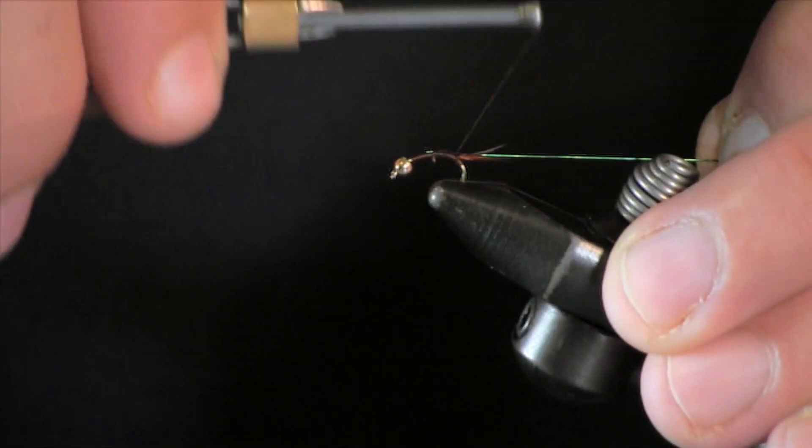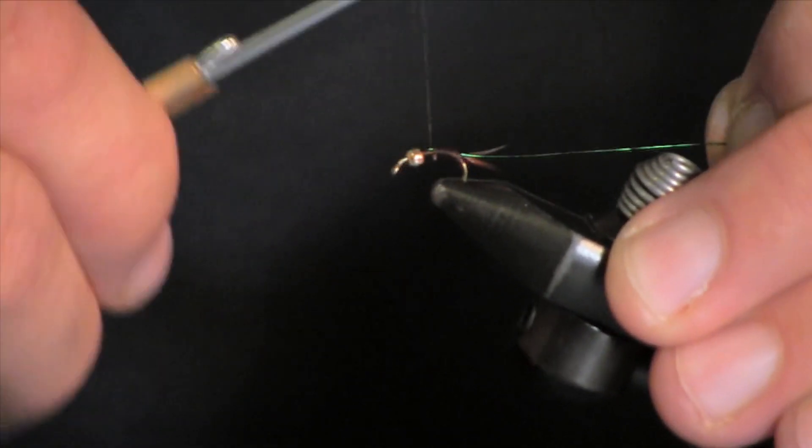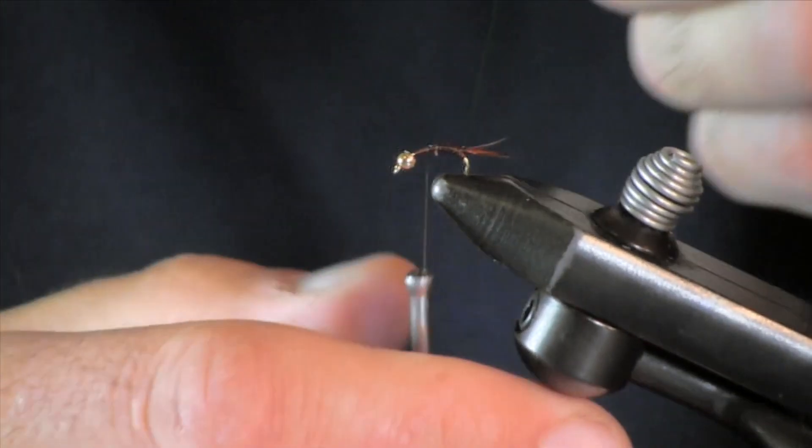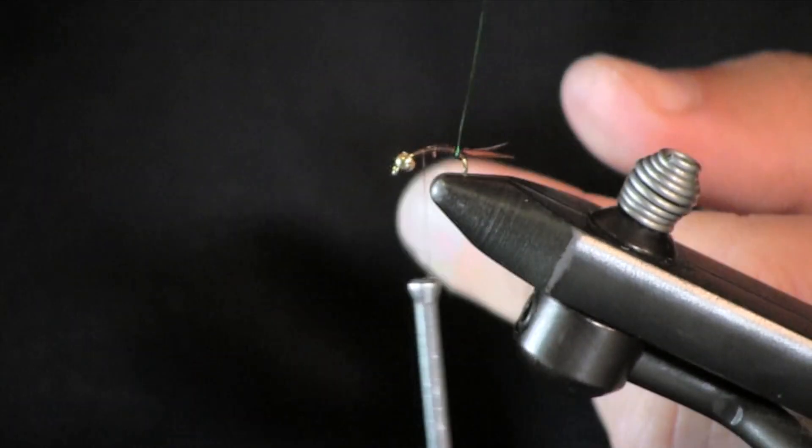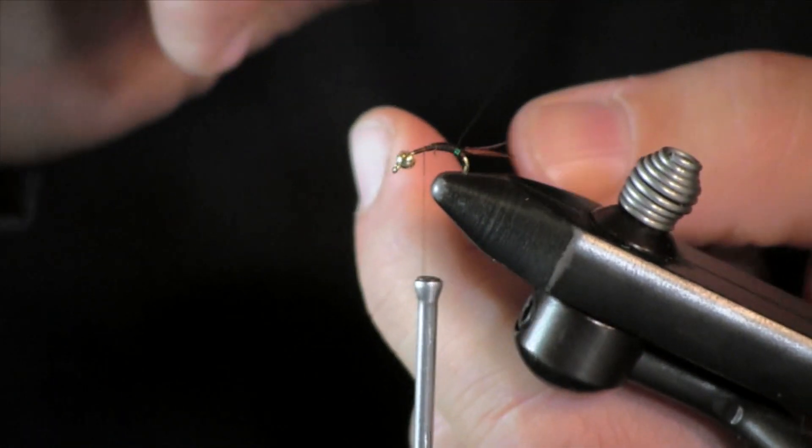Just going to tie the green wire down on this and wrap it back to the back. The green wire we are going to be wrapping for our body, that is going to make the body of this fly. Wrap the thread back up here and then we are just going to wrap our green wire on to make the body kind of like a brassy, same effect as you get with a brassy.